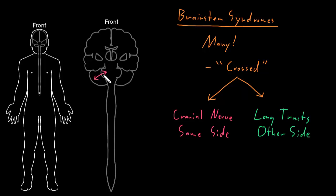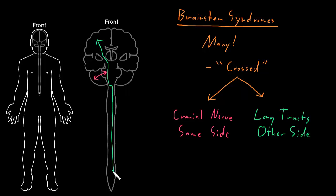In addition to cranial nerves coming in and out of the brainstem, we also have the long motor and somatosensory tracts passing through the brainstem on their way down to the spinal cord or up from the spinal cord. Let's say it's one of these long motor or somatosensory tracts coming down this side of the brainstem, and it's one that crosses around here.